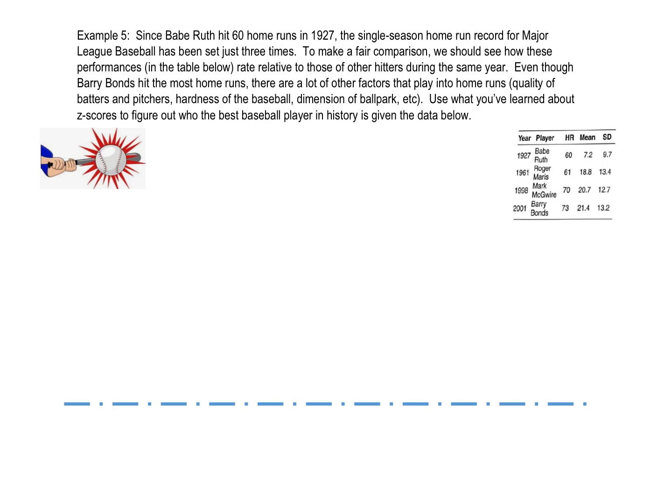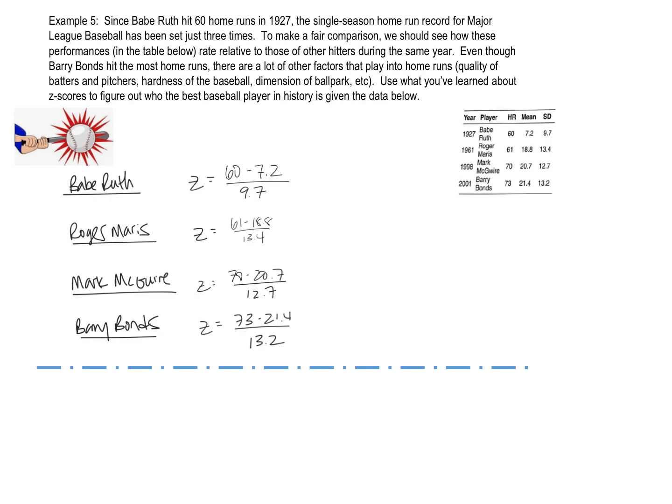So what we're going to do is I'm going to calculate a Z-score for all four of these guys to be able to say who actually is the best home run hitter out there. So what I've done here is I have set up for all four of the baseball players their own Z-score calculation. Remember, you take their X value, which is the number of home runs that they hit, that's their value, and subtract the mean. So the mean here is 7.2 and divide by the standard deviation, which is 9.7.